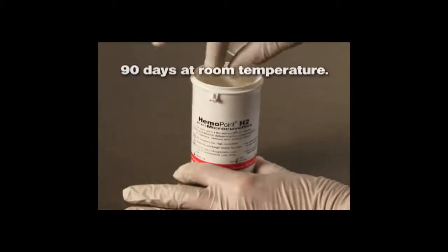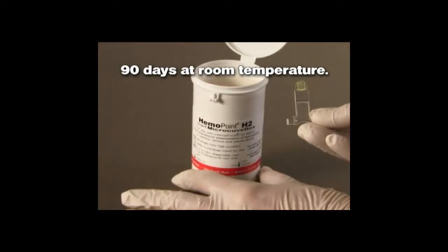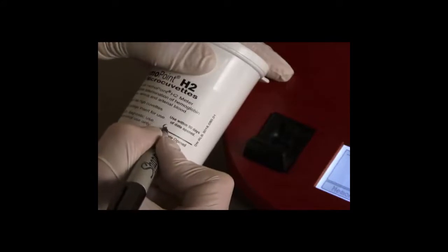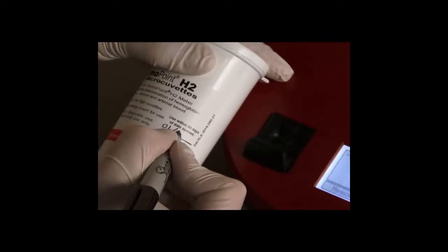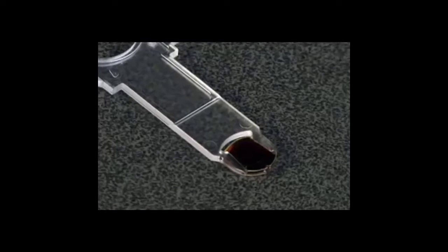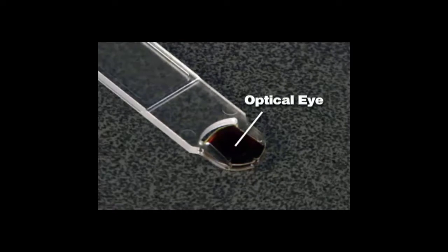Once opened, micro-cuvettes are stable for 90 days at room temperature. See the Hemopoint H2 micro-cuvette container label for additional information. Please make note of the date of opening on the container label. The micro-cuvette is a precision optical component. It is analyzed optically in the Hemopoint H2 photometer. The light from the light source should penetrate through the sample to the photo detector with the least possible influence from the micro-cuvette.